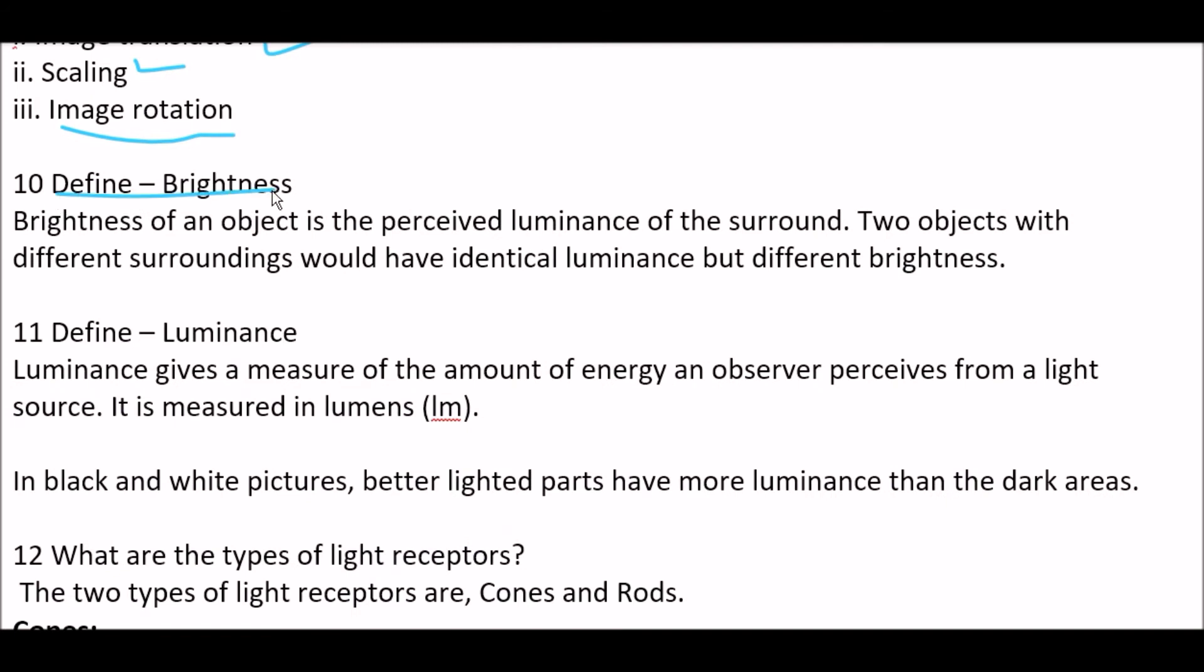Next question. Define brightness. Answer is, brightness of an object is the perceived luminance of the surround. Two objects with different surroundings would have identical luminance but different brightness.